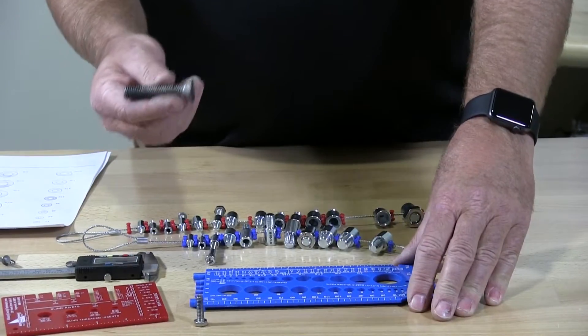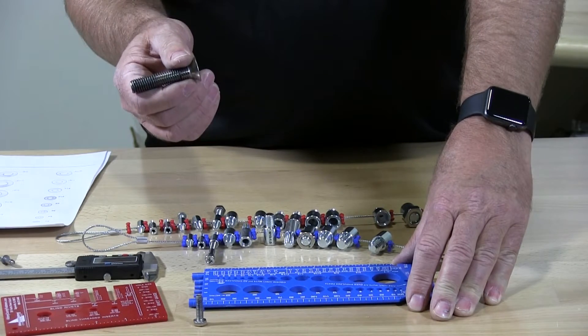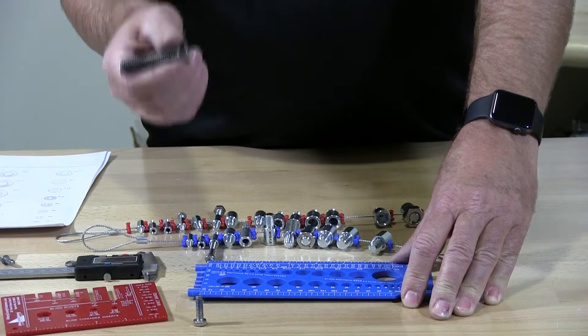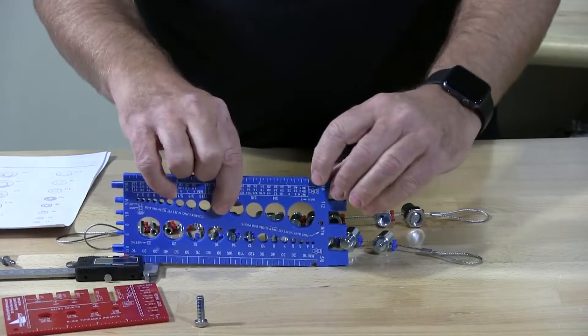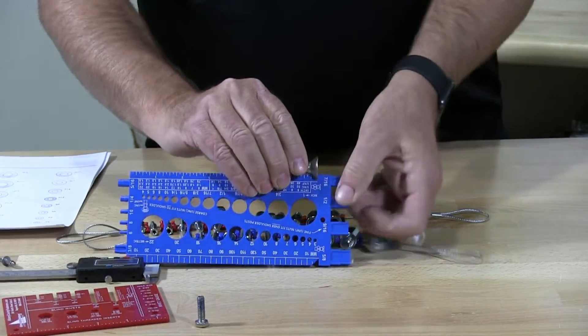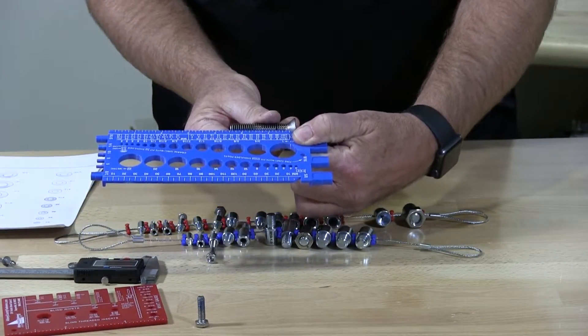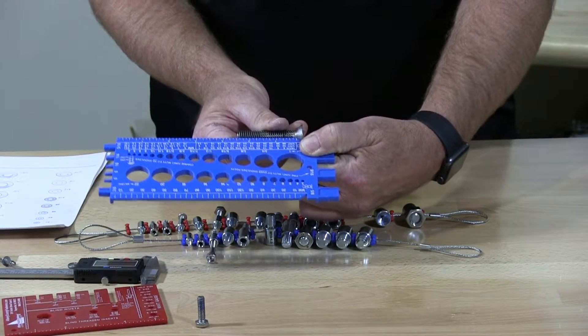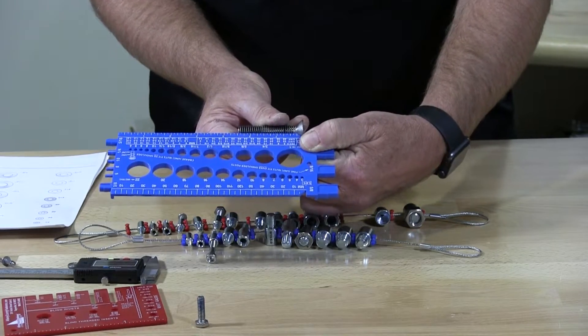When you're measuring a flat head socket cap, a flat head sheet metal screw, or a flat head wood screw, or a deck screw, this notch right here, that is made so you can get the length. And the length of this, which includes the head, would be 2½ inches long.